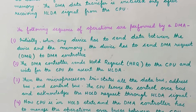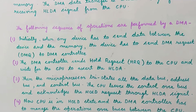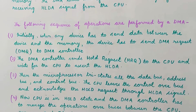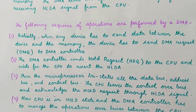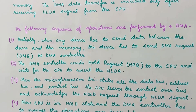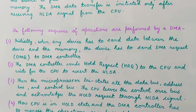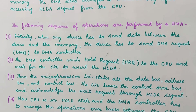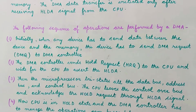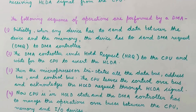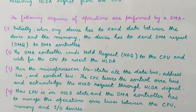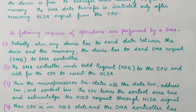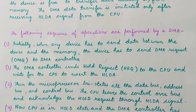Then the CPU will leave control of the three buses, and the hold acknowledgement signal will be sent to the device indicating 'I am ready and I am leaving hold over all the three buses.' When the hold acknowledgement signal is sent to the device, the CPU will remain in hold state and the DMA controller will manage all the operations.